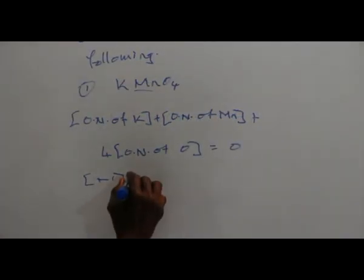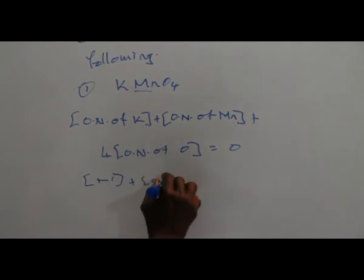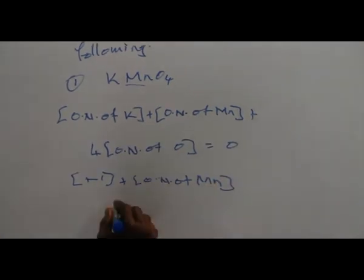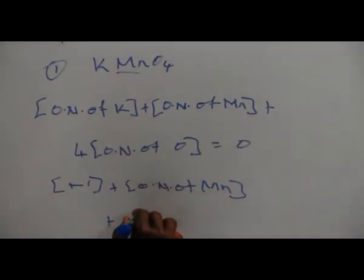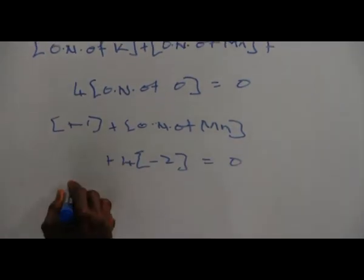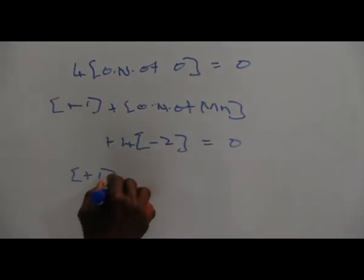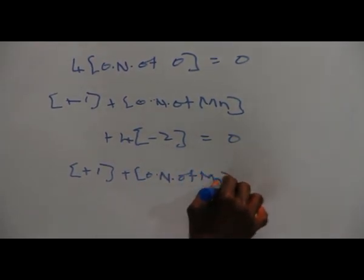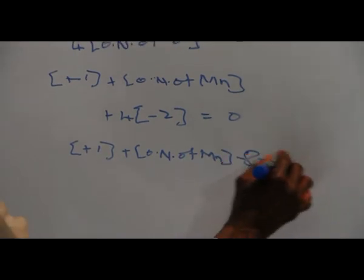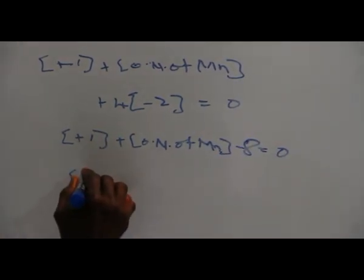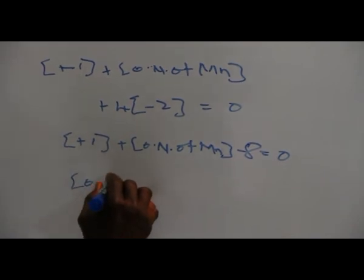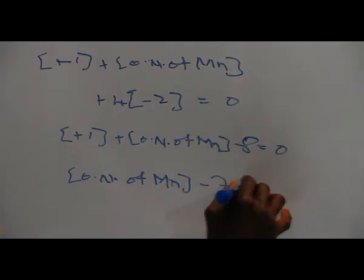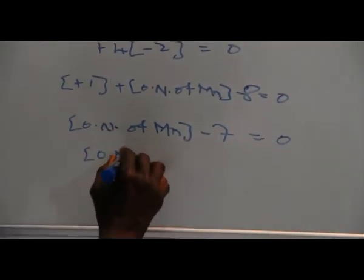Plus one, plus oxidation number of manganese, plus four into minus two equals zero. Plus one plus oxidation number of manganese minus eight equals zero. Oxidation number of manganese minus seven equals zero.